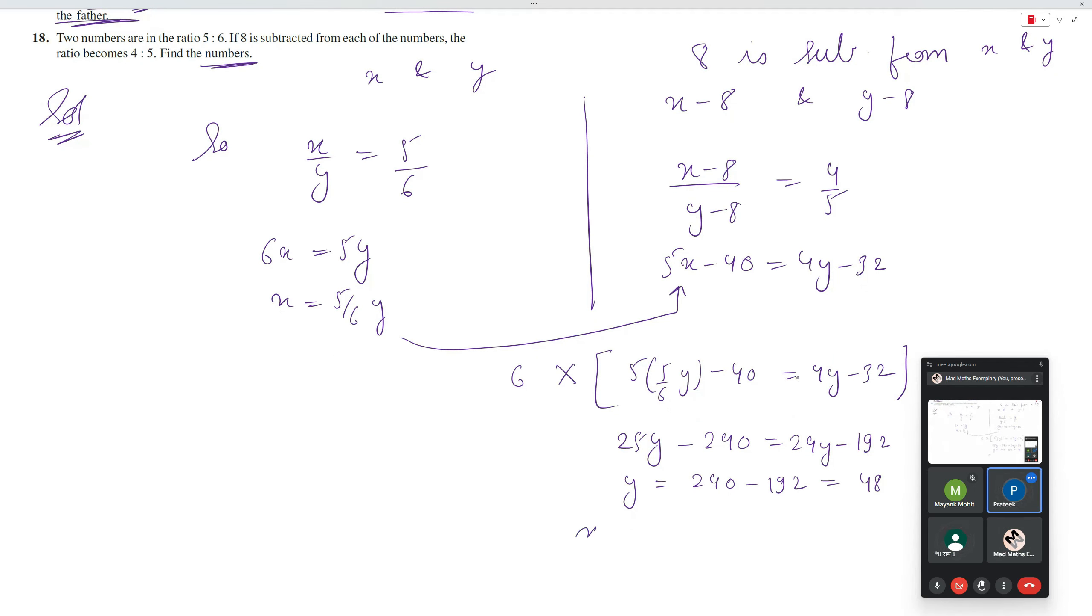Yes sir, so x by 48 is equals to 5 by 6. 48 is a multiple of 6, so 6 into 8, x is equals to 5 into 8, 40. So 40 or 48, yes sir.